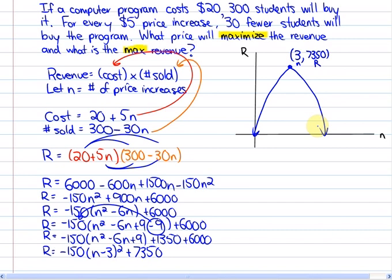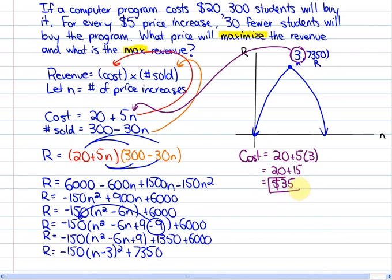So now we can actually answer the questions. If we know that n is 3 at a maximum revenue of $7,350, we know that the number of price increases needs to be 3. In other words, to figure out the price that will maximize the revenue, it's going to be the cost equal to 20 plus 5 times 3 price increases, which is going to be $35. So the price that will maximize the revenue is $35.